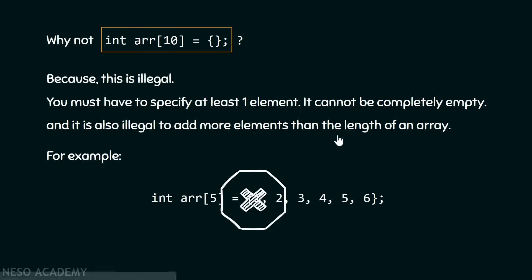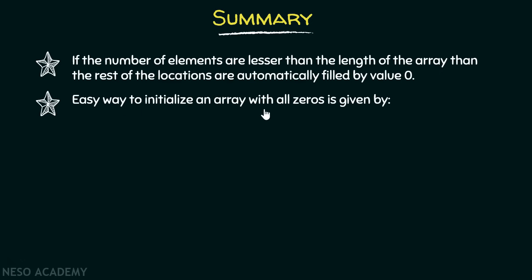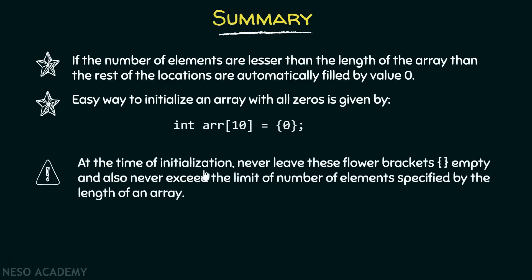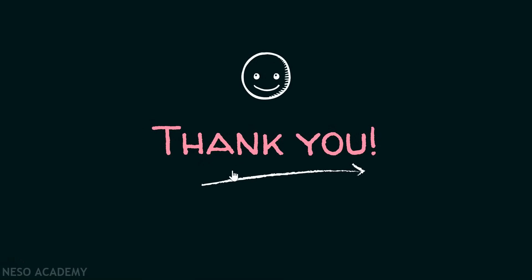Here is a quick recap. If the number of elements is lesser than the length of the array, the rest of the locations are automatically filled by value zero. The easiest way to initialize an array with all zeros is to place a single zero in the flower brackets. At the time of initialization, never leave the flower brackets empty, and never exceed the number of elements specified by the length of the array. Thank you for watching this presentation.